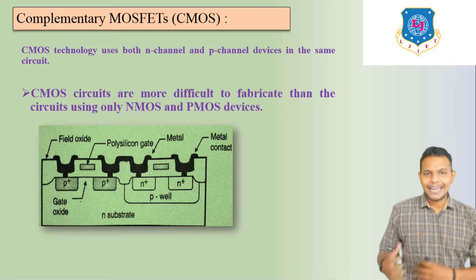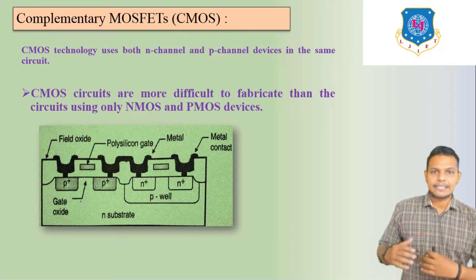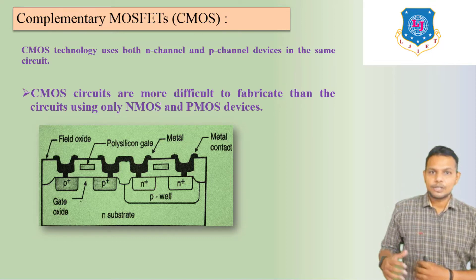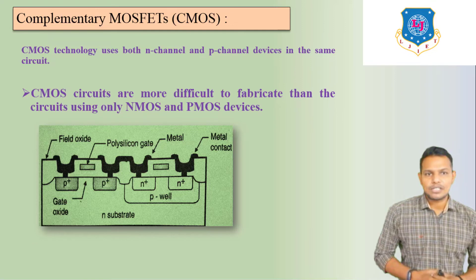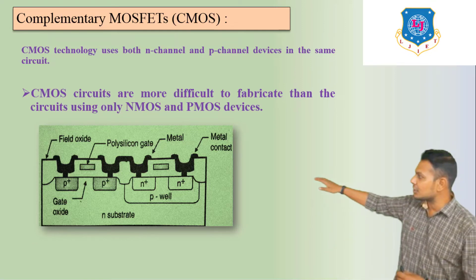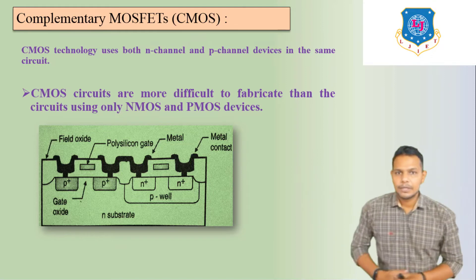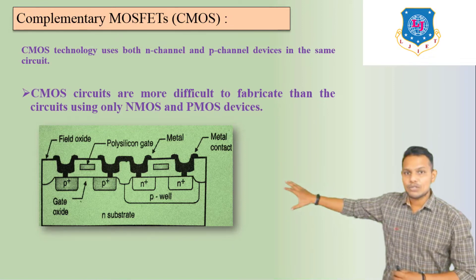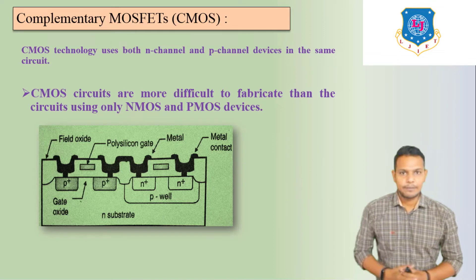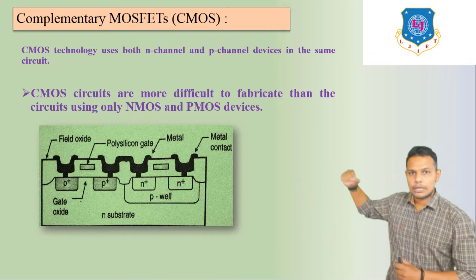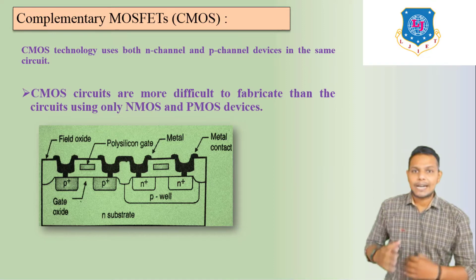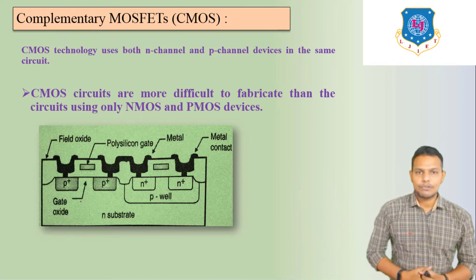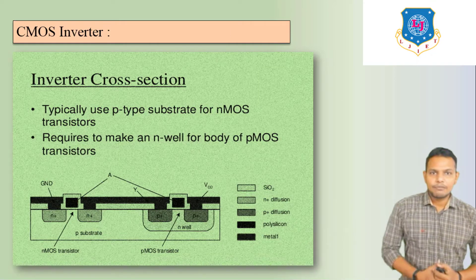CMOS technology uses both N-channel and P-channel devices in the same circuit. CMOS circuits are more difficult to fabricate than circuits using only NMOS and PMOS devices. Here we can see the construction of a CMOS inverter. In this circuit diagram we are going to use an N-channel E-MOSFET as well as a P-channel E-MOSFET. If you are clear about N-channel and P-channel E-MOSFETs, then you can easily understand this complementary MOSFET.